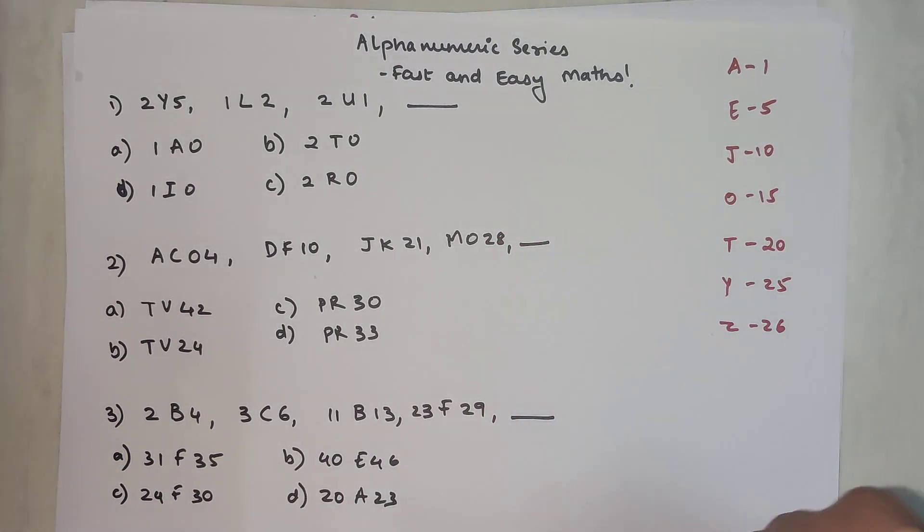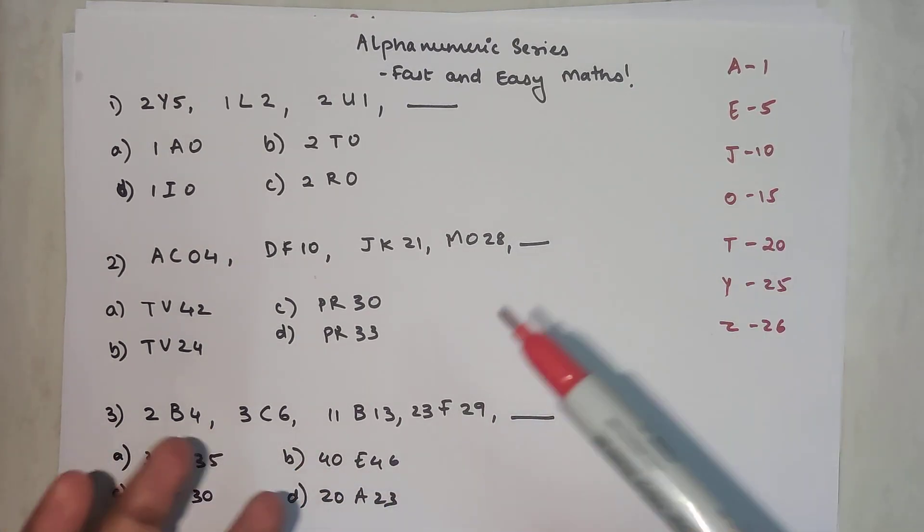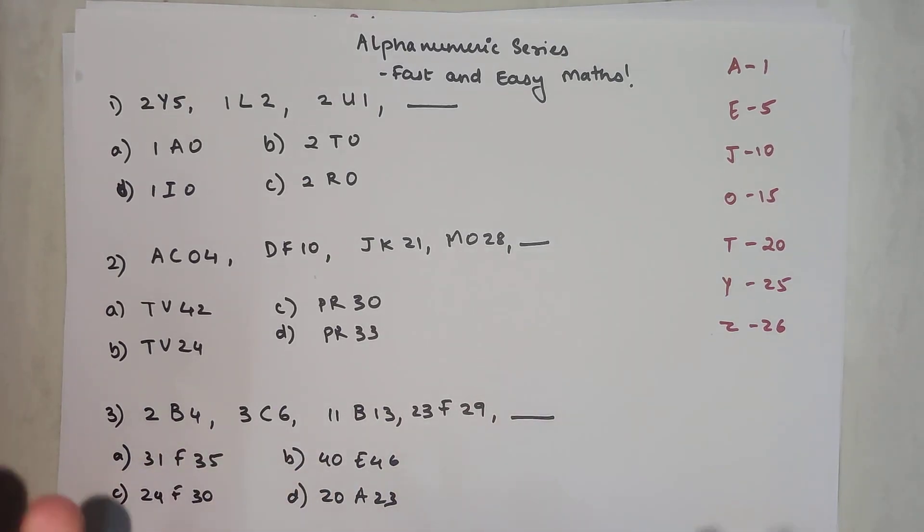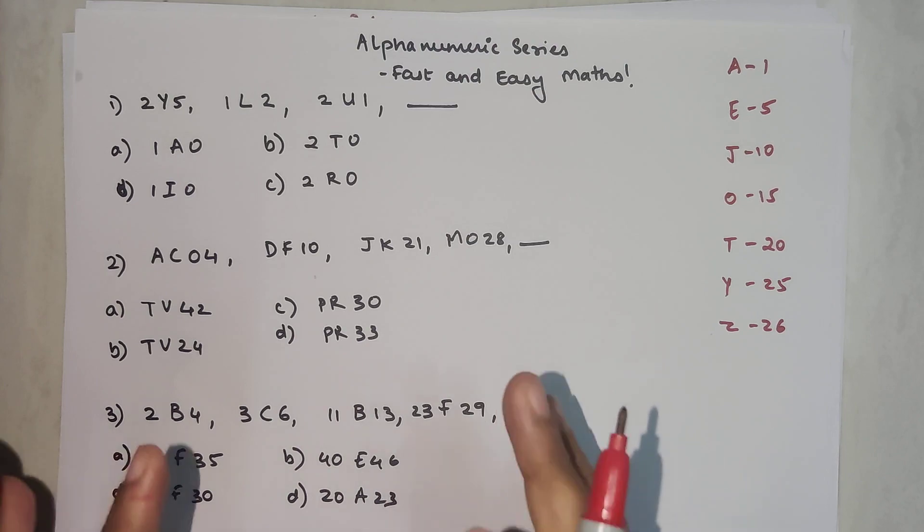These are the basic numbers representing these letters. When you are solving alphanumeric series, you're trying to find a correlation between the numbers and the alphabets.